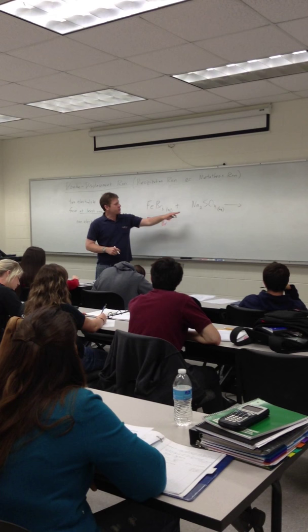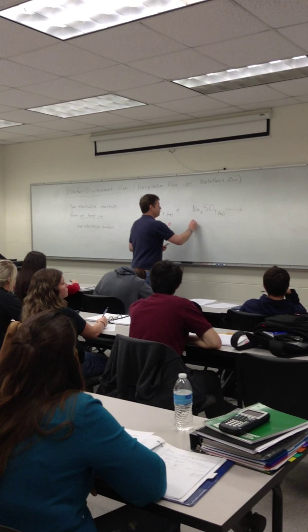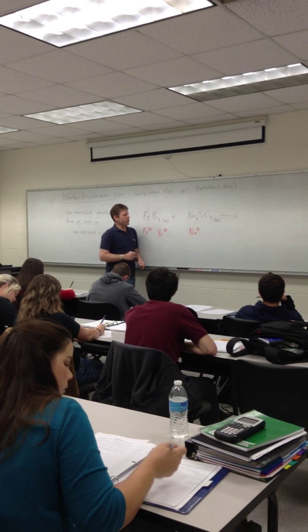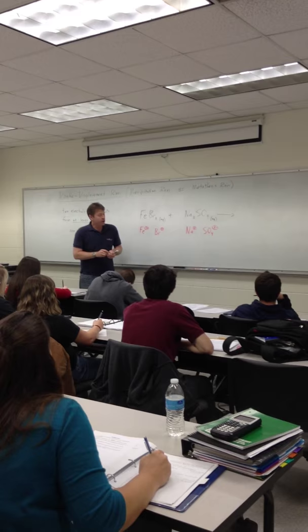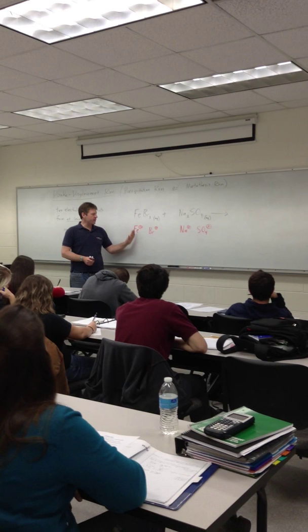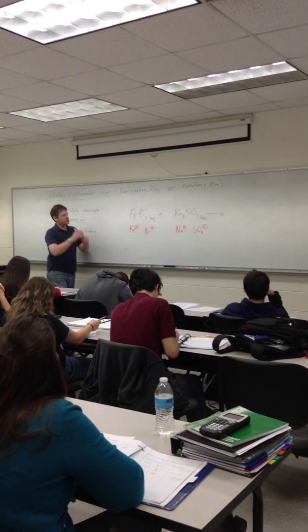Same deal in our second reactant. What is our cation here? What type of cation do we have? It's just Na plus. We needed 2 of them to balance out the negative 2 charge on the sulfate. But we don't care about that. Don't make weird polyatomic structures here. All we're looking for is what type of cation, what type of anion we have in each of our two reactants.